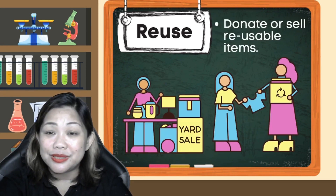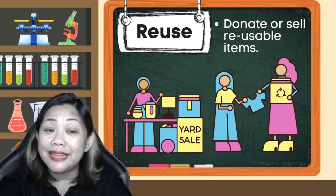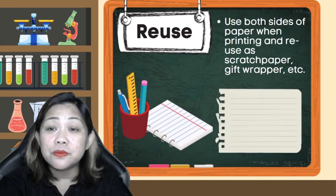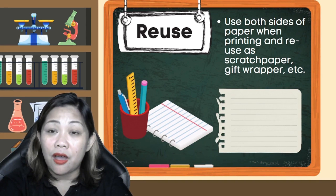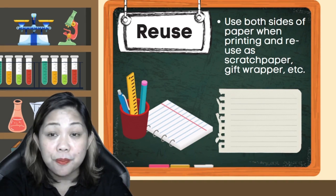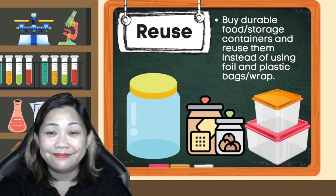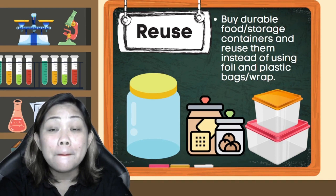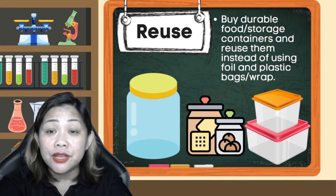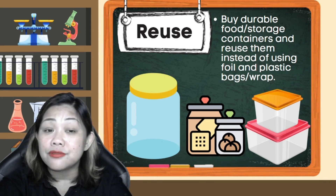Reuse: Donate or sell reusable items. Use both sides of paper when printing and reuse it as scratch paper or gift wrapper. Buy durable food or storage containers and reuse them instead of foil, plastic bags, or wrap.